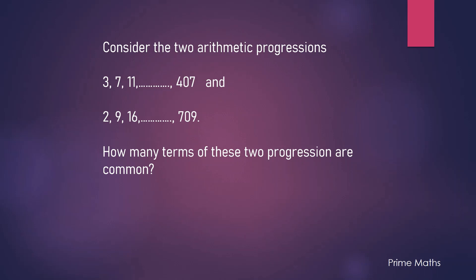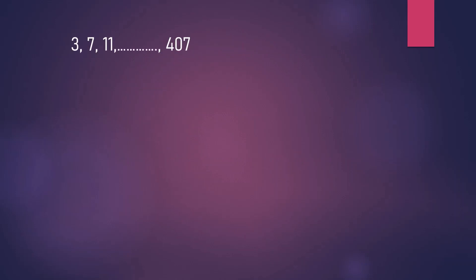Let's start solving. For the first progression, it is easy to see that the first term is 3, and the common difference is 4. Also, since the last term is given, we can find the number of terms easily using the formula of a general term. We see that it has 102 terms.